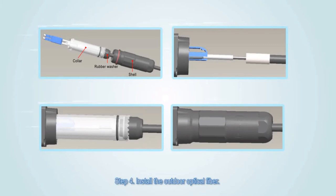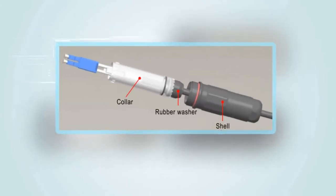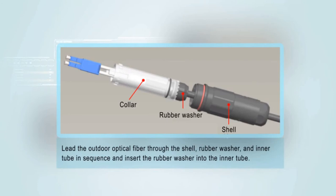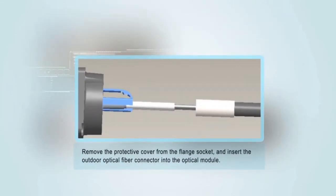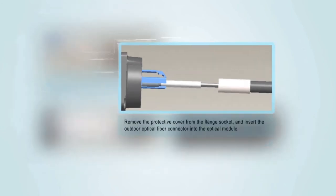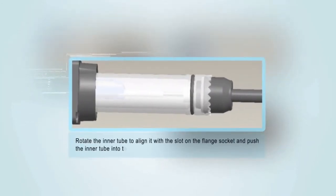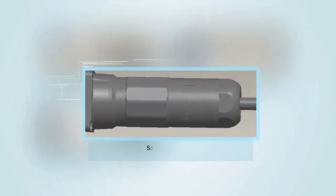Step 4: Install the outdoor optical fiber. Lead the outdoor optical fiber through the shell, rubber washer, and inner tube in sequence and insert the rubber washer into the inner tube. Remove the protective cover from the flange socket and insert the outdoor optical fiber connector into the optical module. Rotate the inner tube to align it with the slot on the flange socket and push the inner tube into the flange socket. Screw the shell.